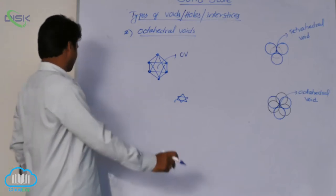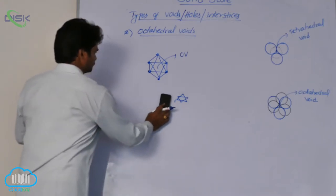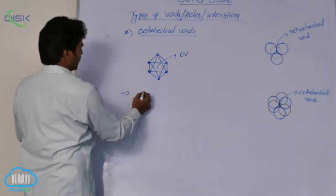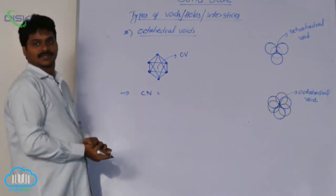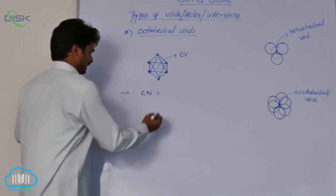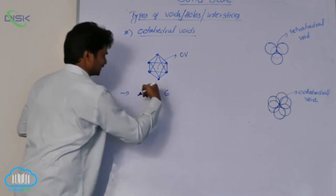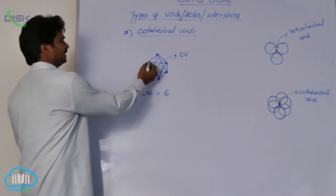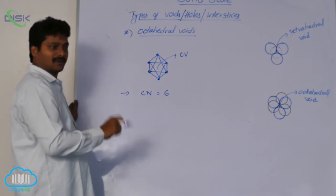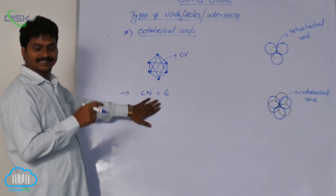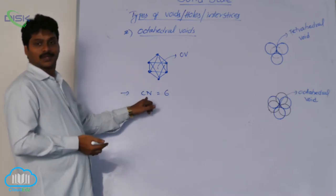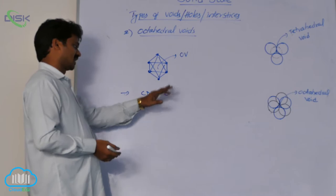The coordination number of an octahedral void refers to how many spheres surround it. This octahedral void is surrounded by 6 spheres — 1, 2, 3, 4, 5, 6. So the octahedral void is formed by 6 spheres, and these 6 spheres occupy a regular octahedron. That is why the coordination number of an octahedral void is 6.